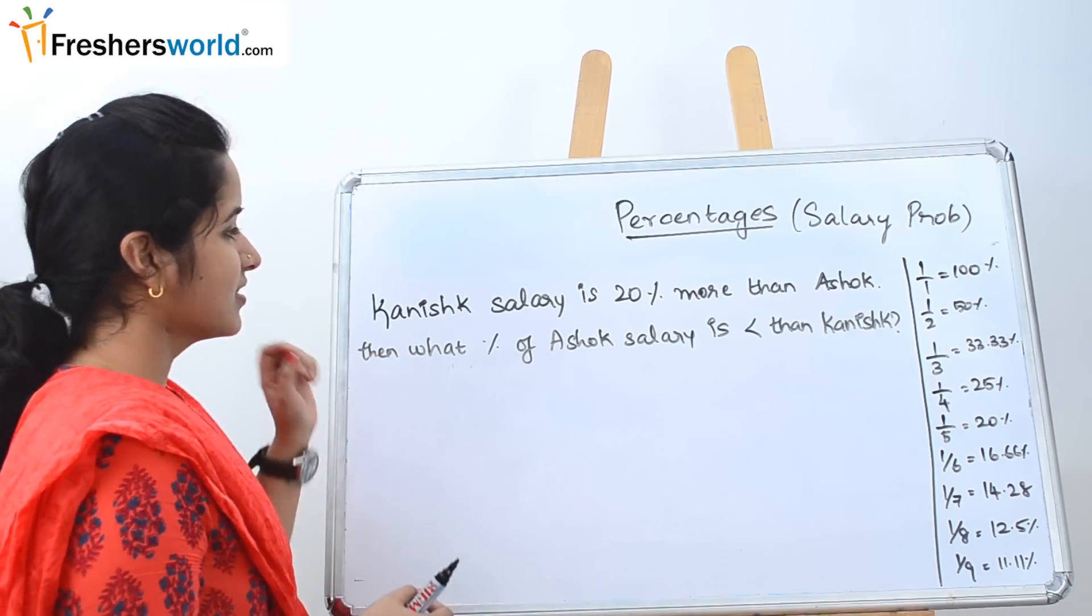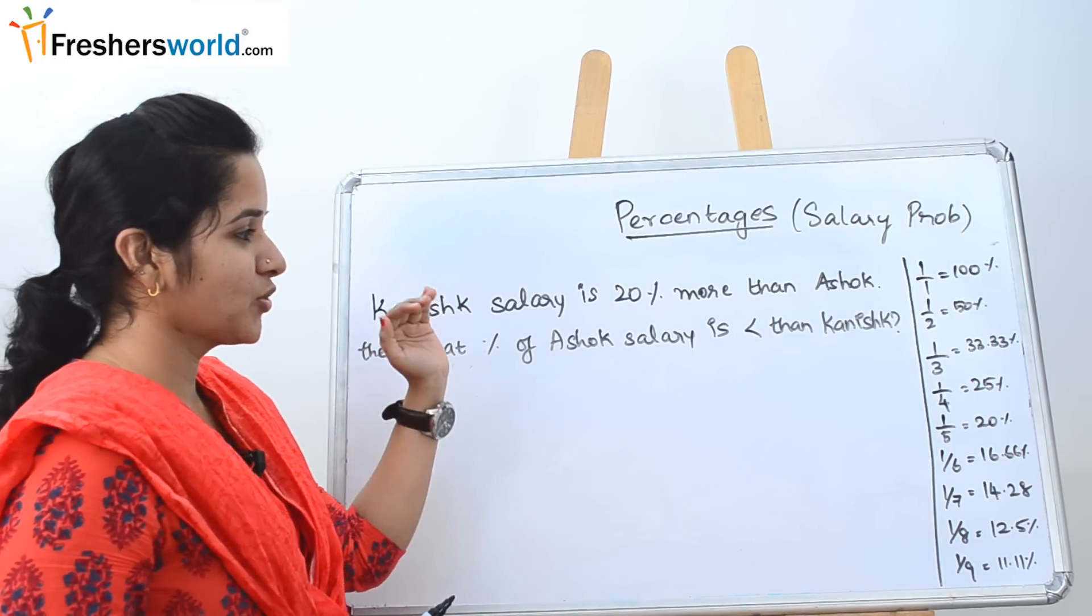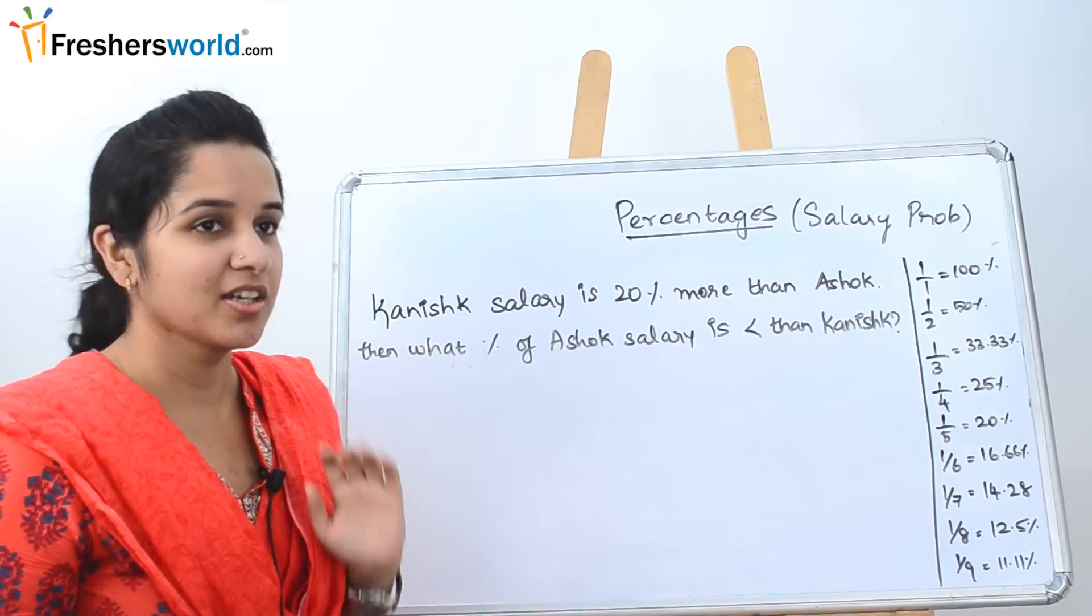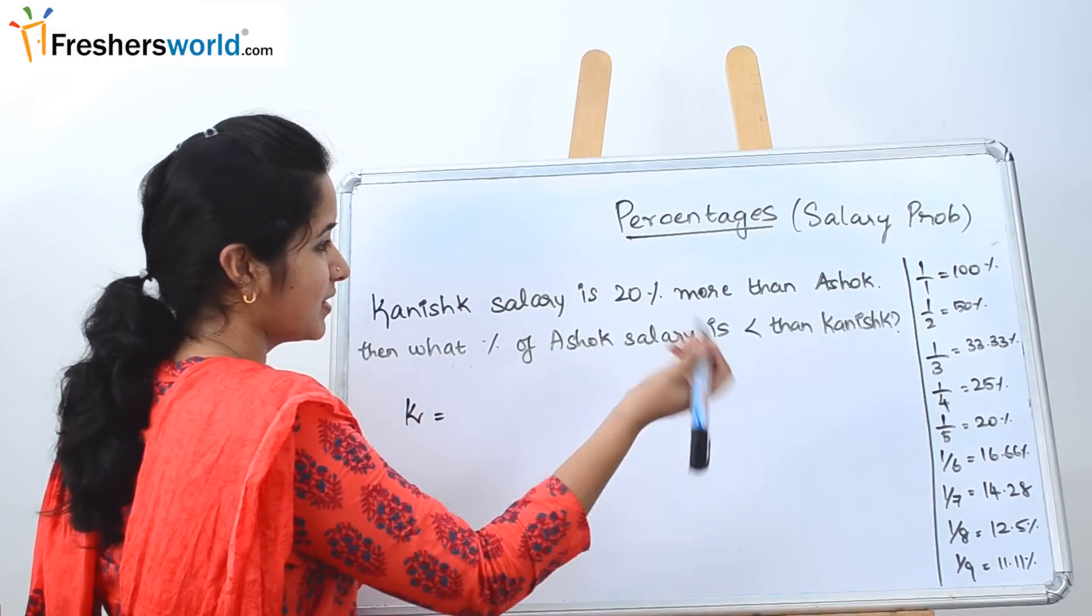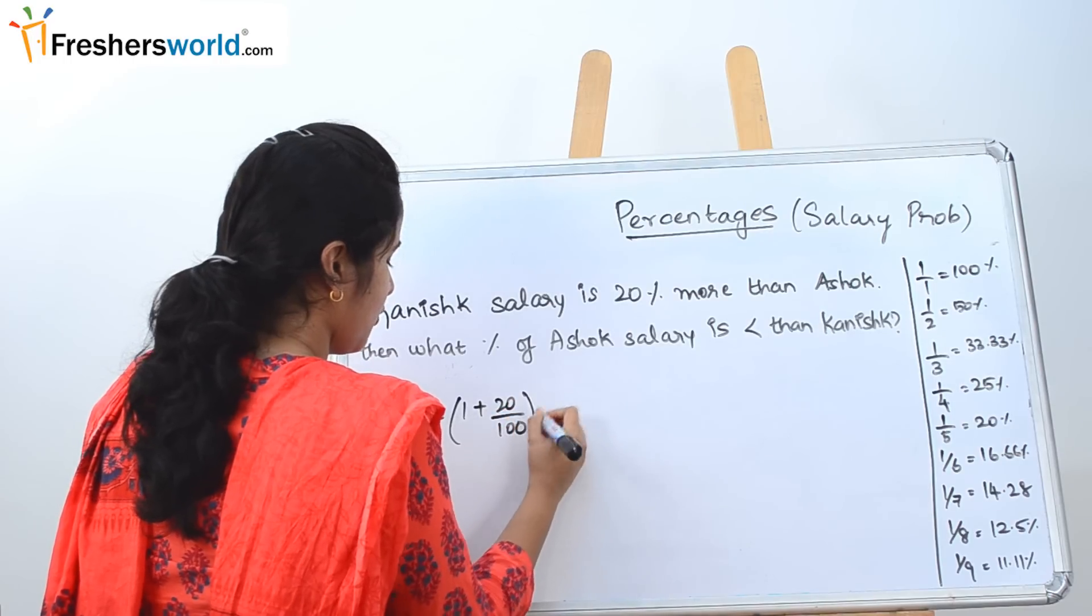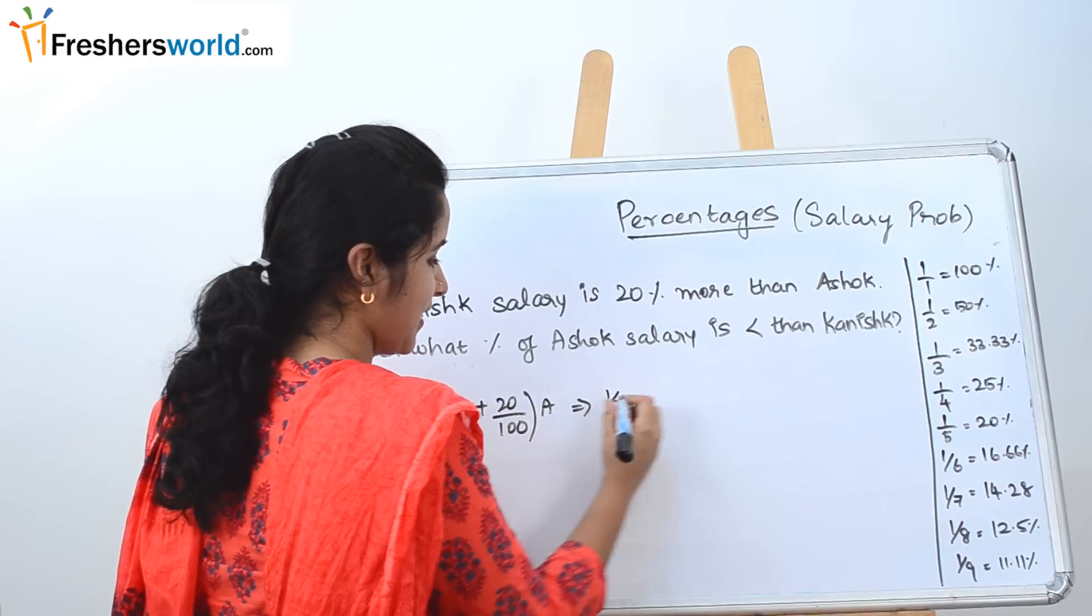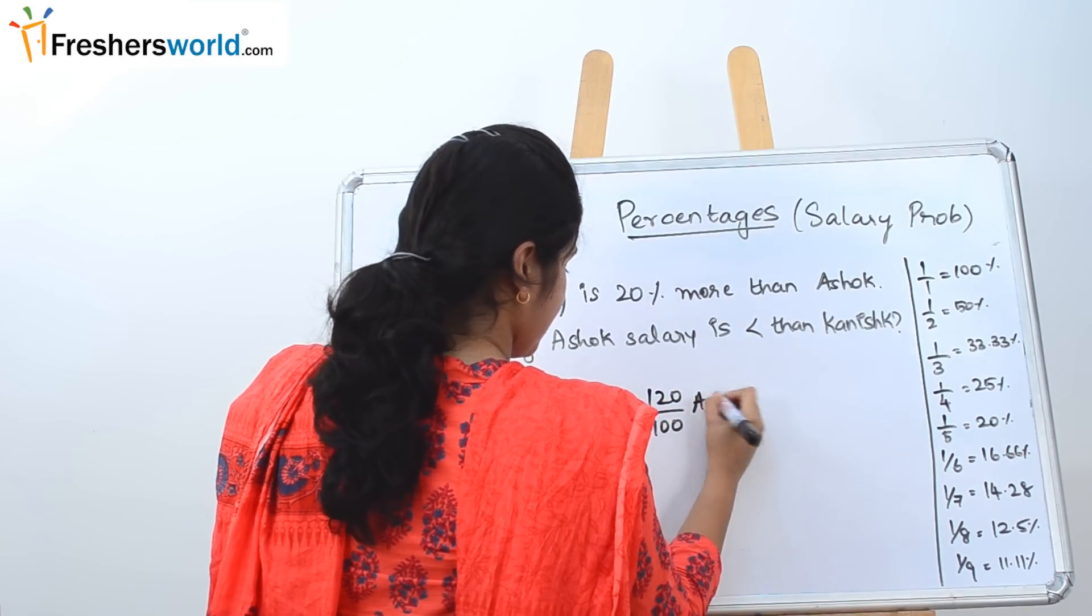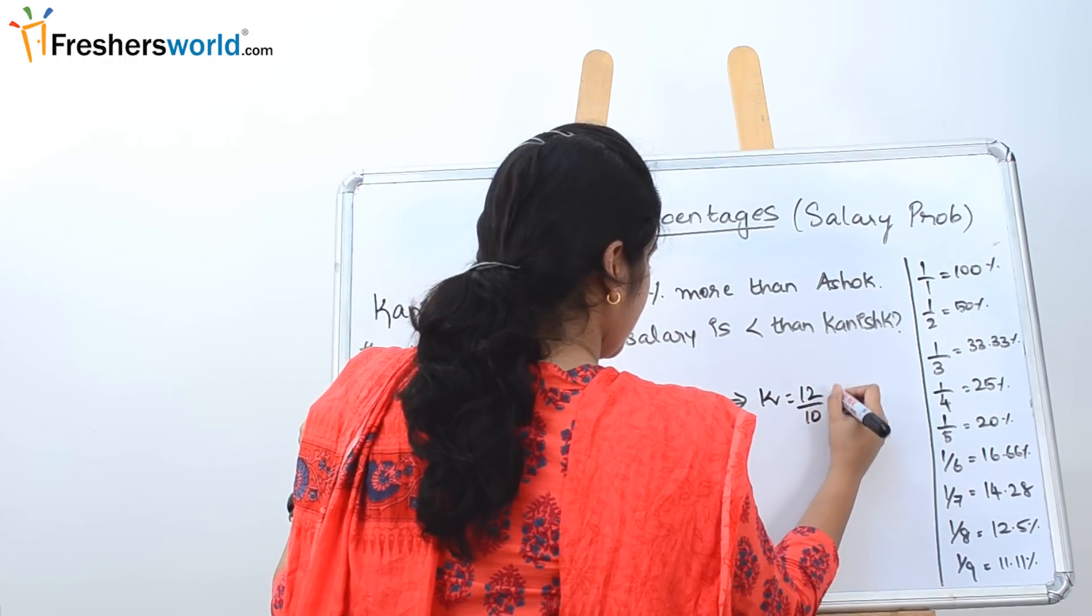The first question is: Kanish's salary is 20% more than Ashok. Then what percentage of Ashok's salary is less than Kanish? What they are given in the question, Kanish's salary is 20% more, which is nothing but 1 plus 20 by 100 more than Ashok. This can be rewritten as 100 plus 20 by 100, which is nothing but 120 by 100 A.